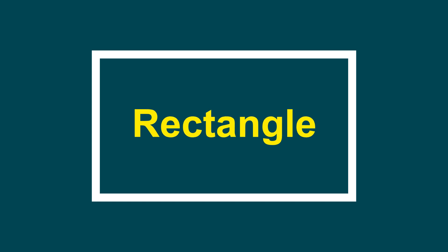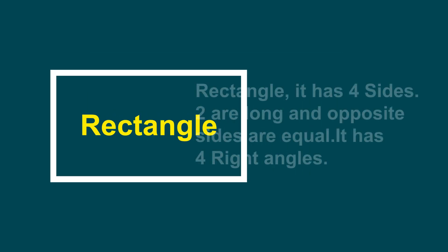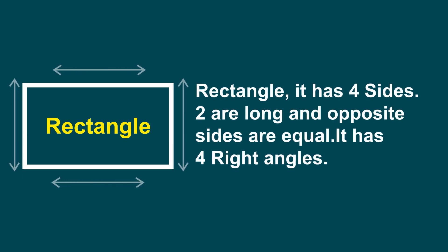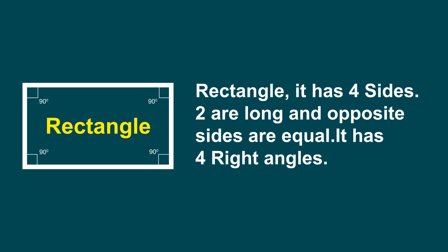Rectangle. It has four sides — two are long and two are short. Opposite sides are equal. It has four right angles.